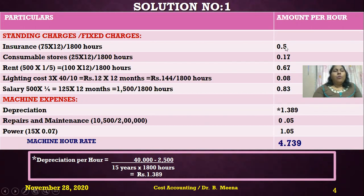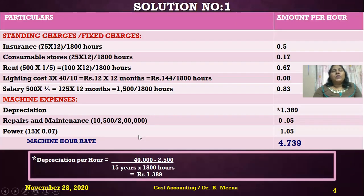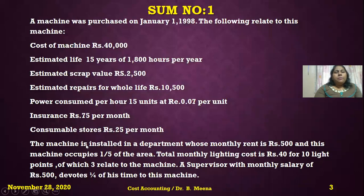Consumable stores are also given per month. So: 25 × 12 = 300 rupees per annum, divided by 1,800 hours = 0.17 rupees per hour for consumable stores.